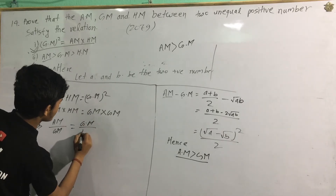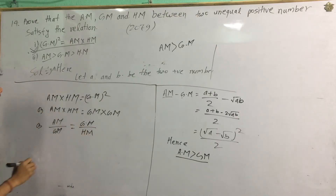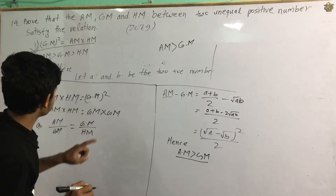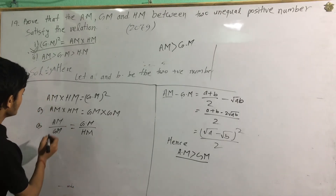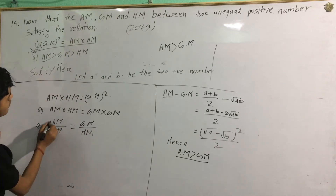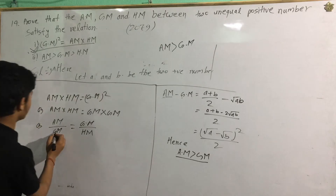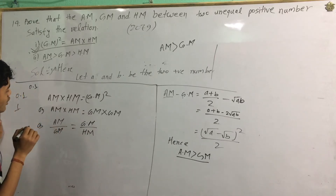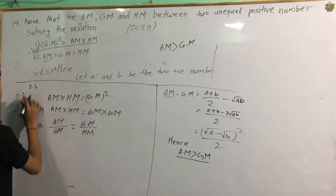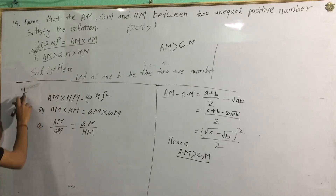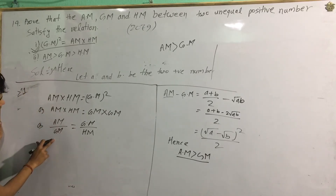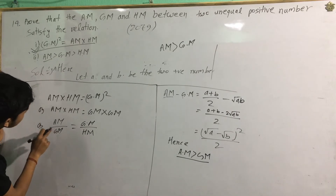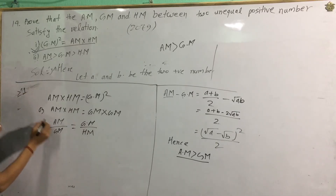GM by HM and AM by GM — what is AM? AM is GM. This is AM, and GM is GM. AM divided by GM, and GM divided by HM. If AM is good and GM is good, then the ratio AM by GM equals 1, which confirms AM equals GM.